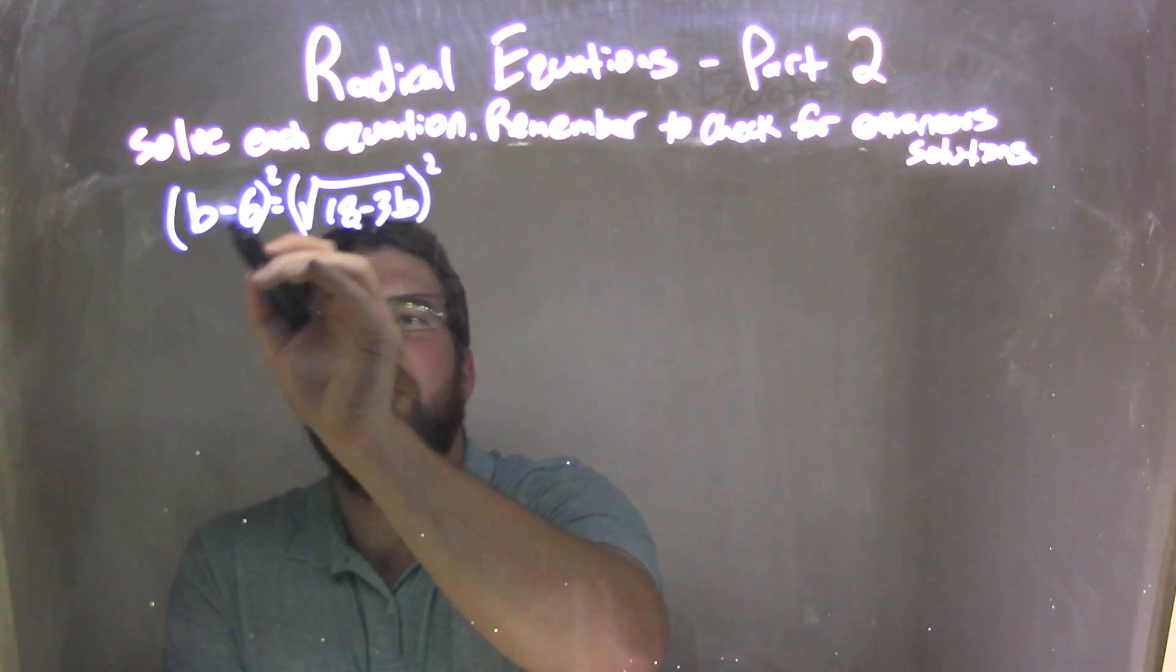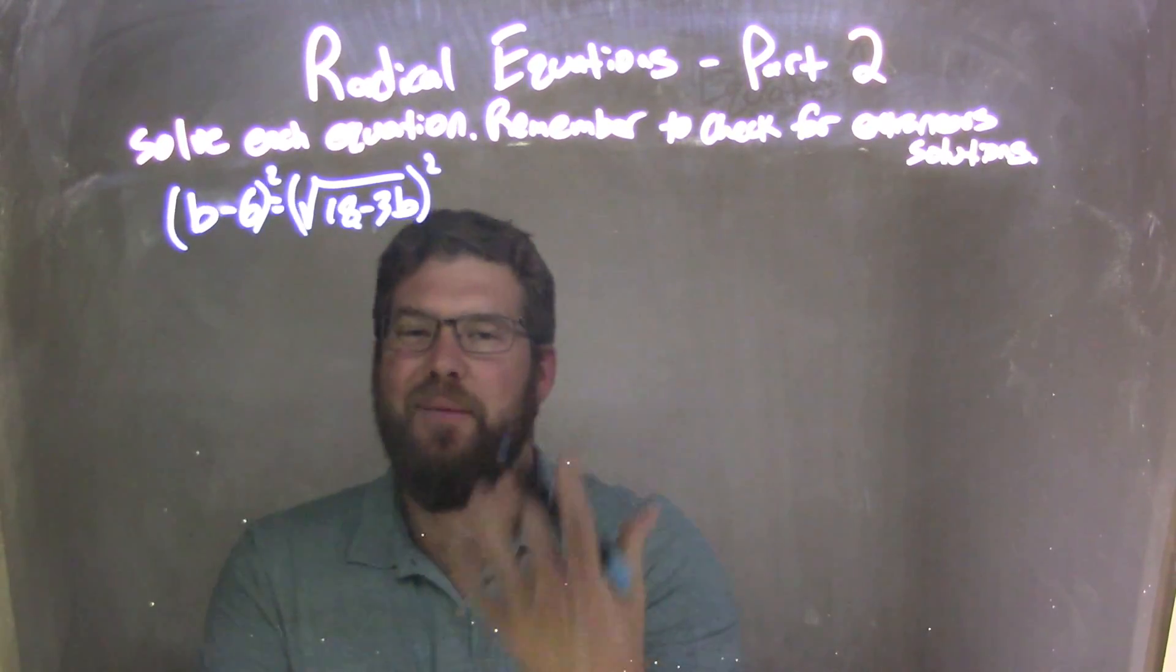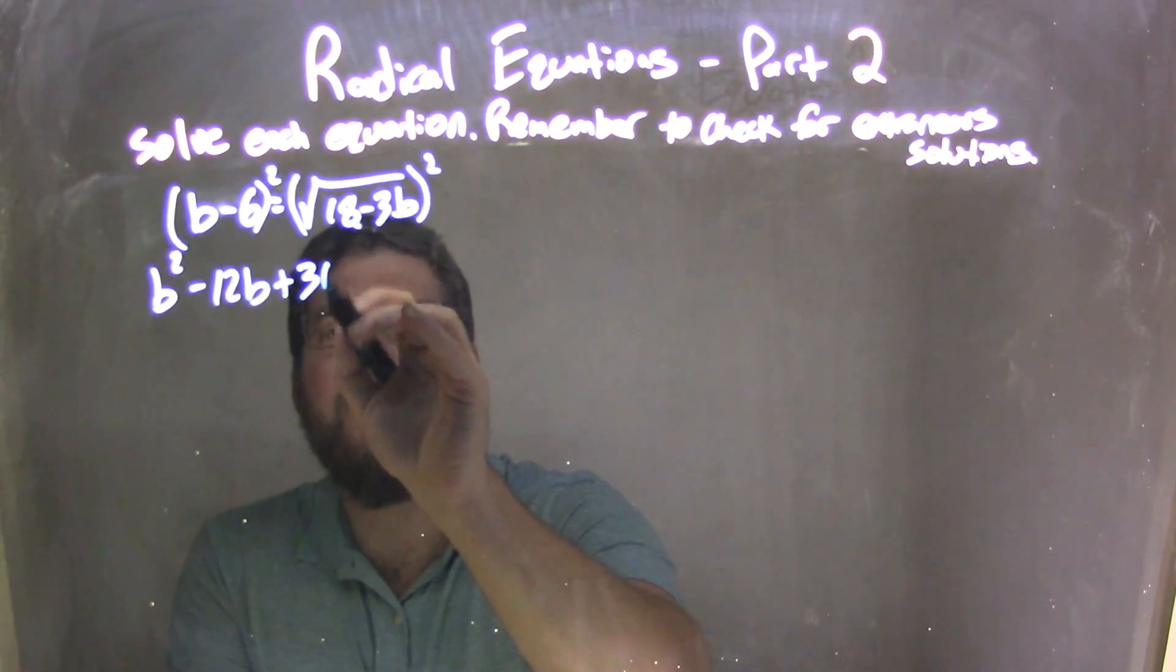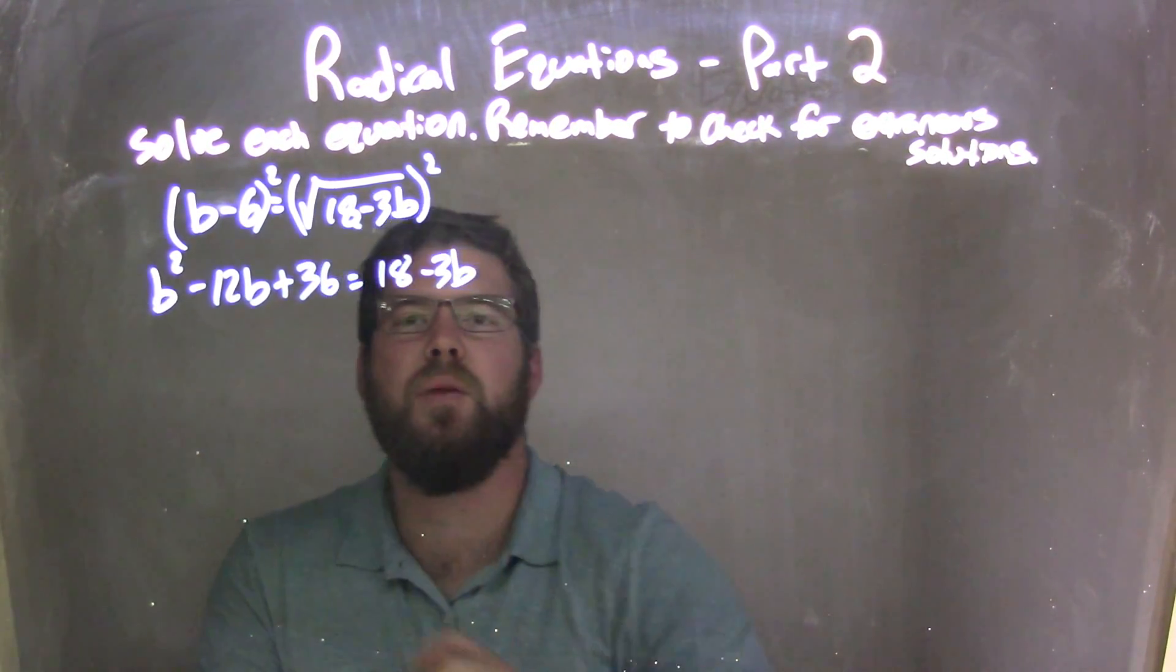Leaving me, well I would multiply that up, that's b minus 6 times b minus 6, gives me b squared minus 12b plus 36 equals 18 minus 3b, okay?